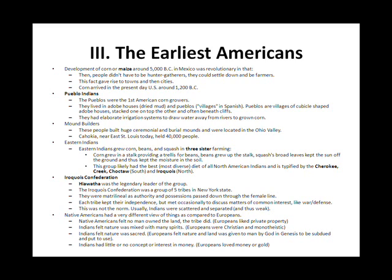Iroquois Confederation: Hiawatha was the legendary leader of the group. The Iroquois Confederation was a group of five tribes in New York State. They were matrilineal, as authority and possessions passed down through the female line. Each tribe kept their independence but met occasionally to discuss matters of common interest, like war or defense. This was not the norm — usually Indians were scattered and separated, and thus weak.